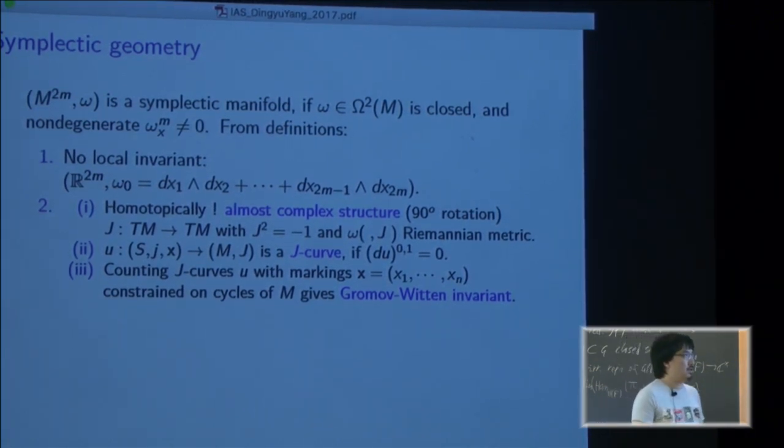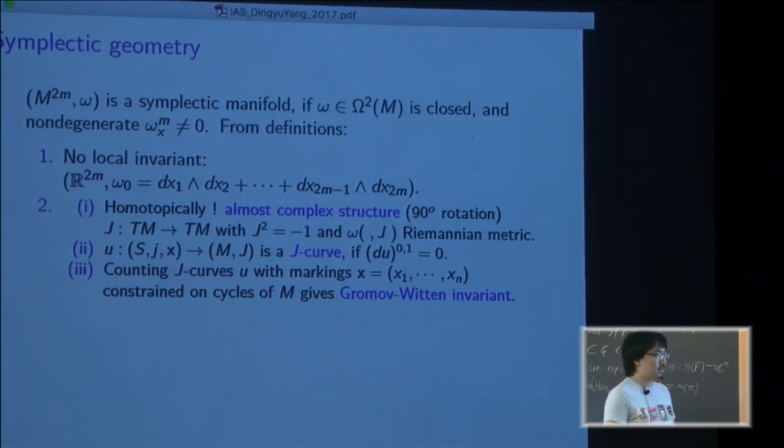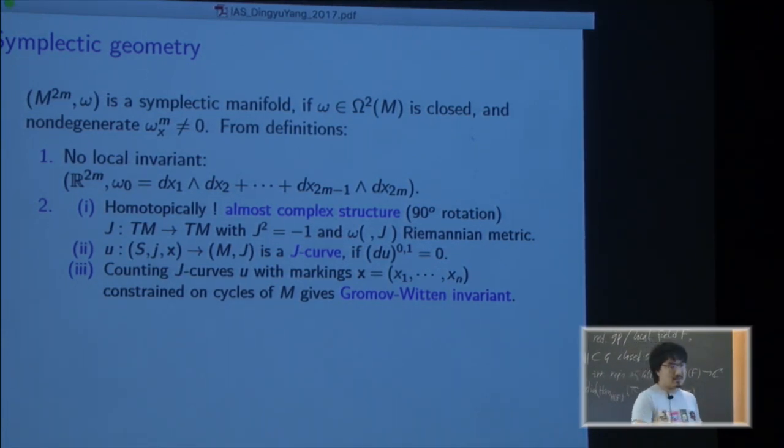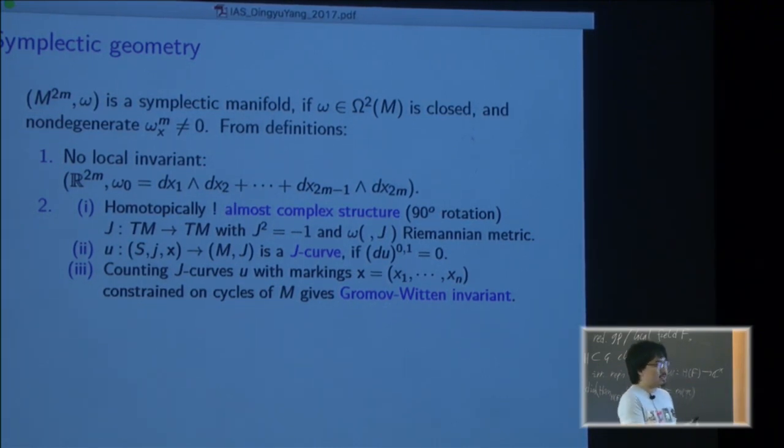Homotopically, a unique almost complex structure exists - it's like 90 degree rotations and it's compatible with the symplectic form. You plug in to the second entry and it gives you a Riemannian metric. From this you can define a J-holomorphic curve, I just call it J-curve. It maps from a Riemann surface, where J means the complex structure of the Riemann surface or the curve.